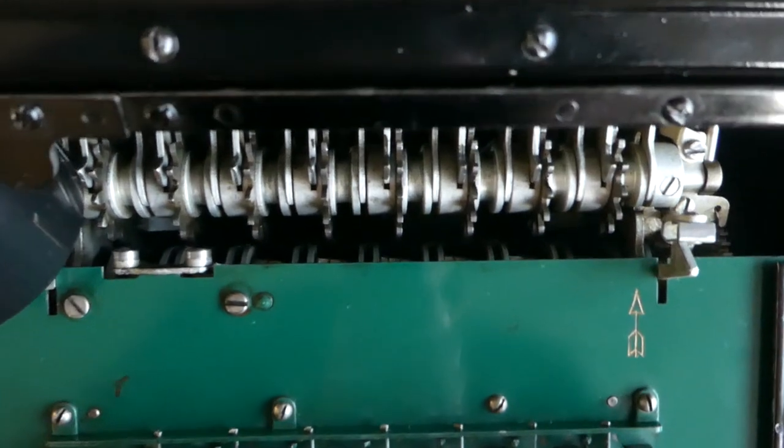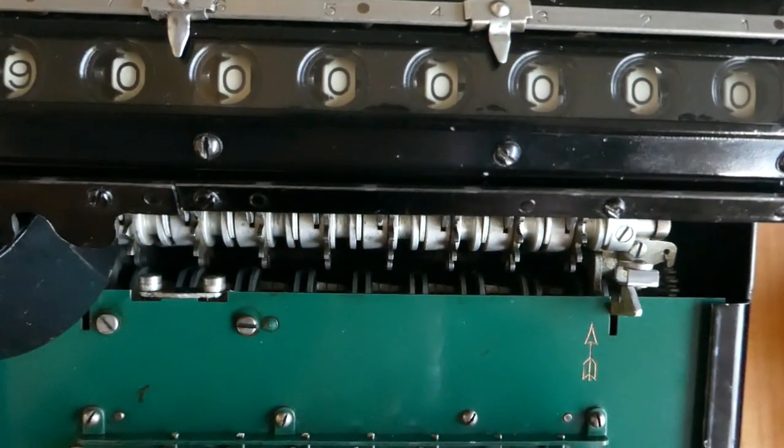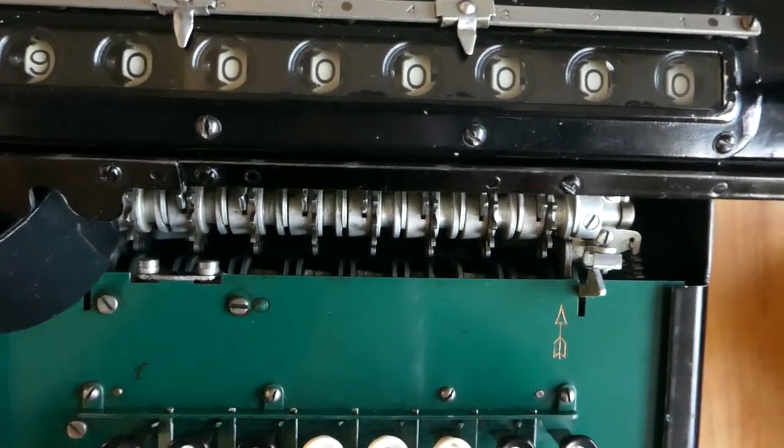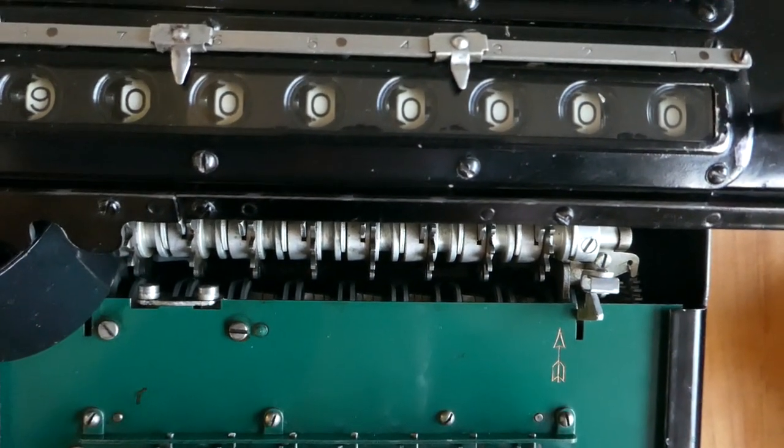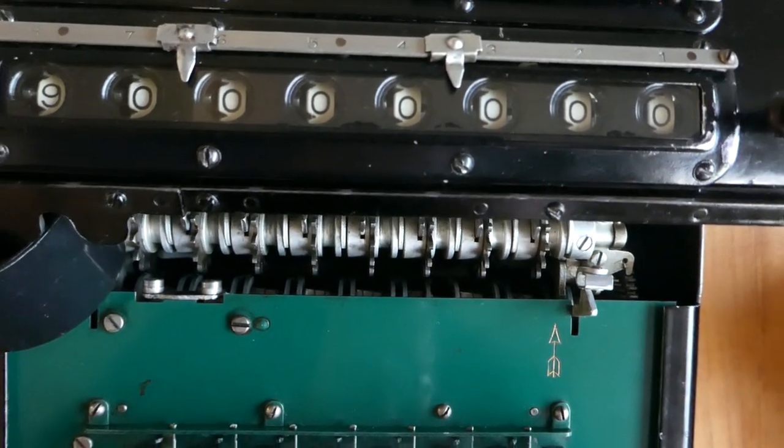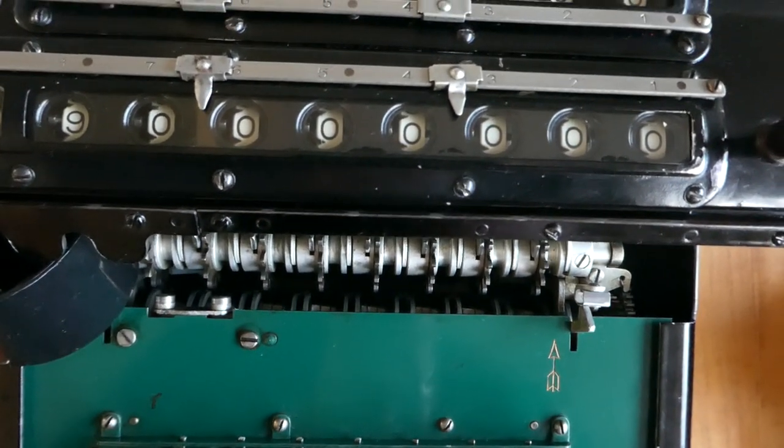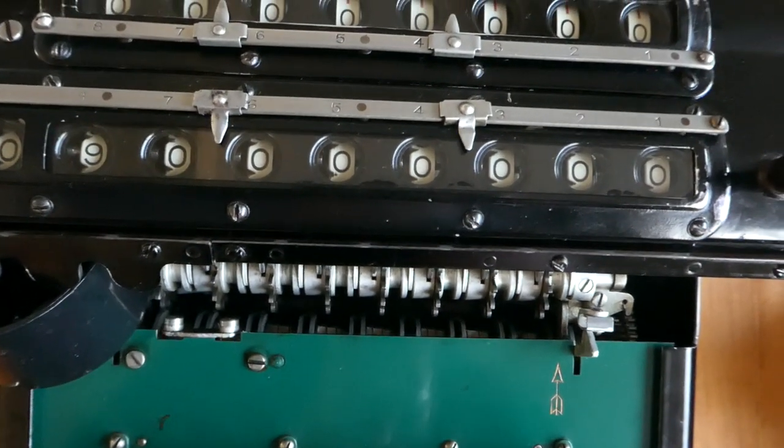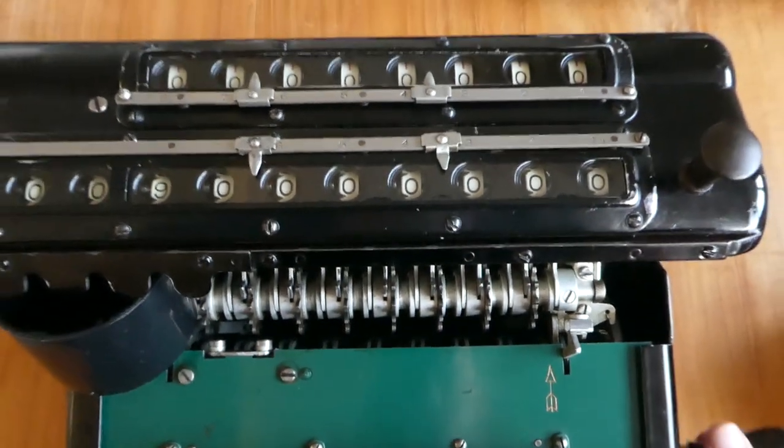You can also see that if I press 1 to 4, you can see that something gets pushed to the left. One, two, three, four, and if I press 5 something gets pushed from the right. And those are the two halves of the stepped drum.